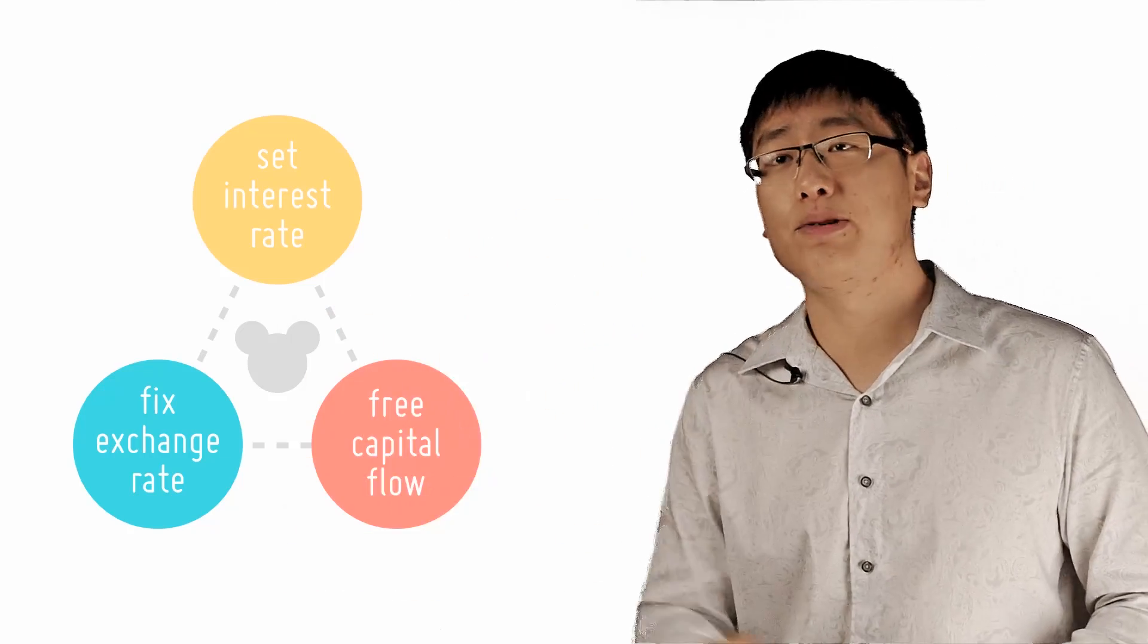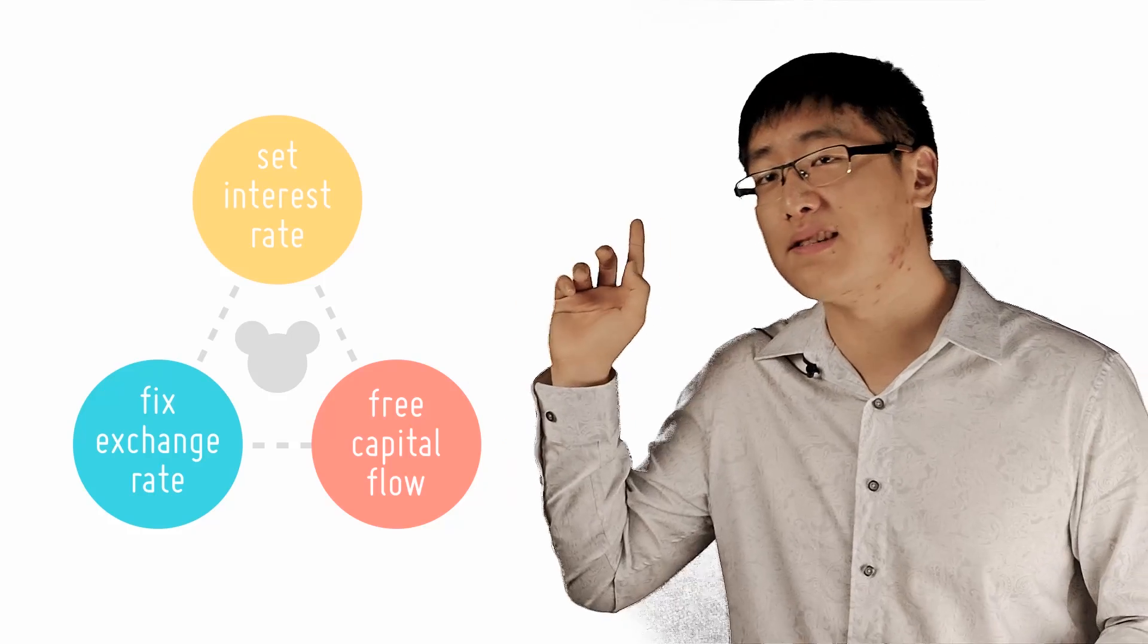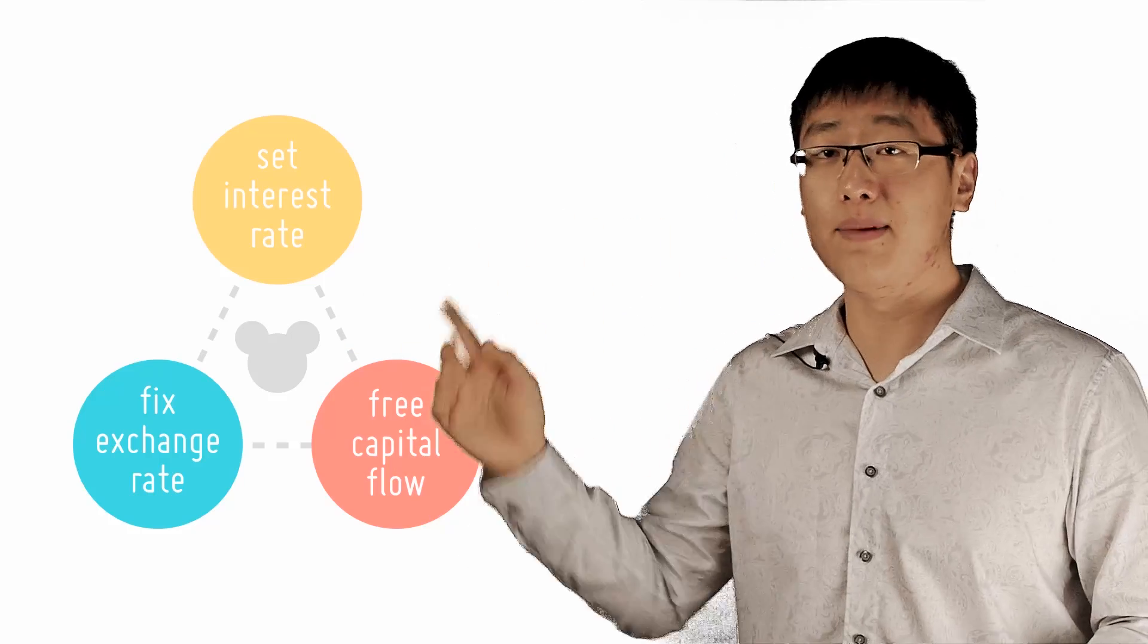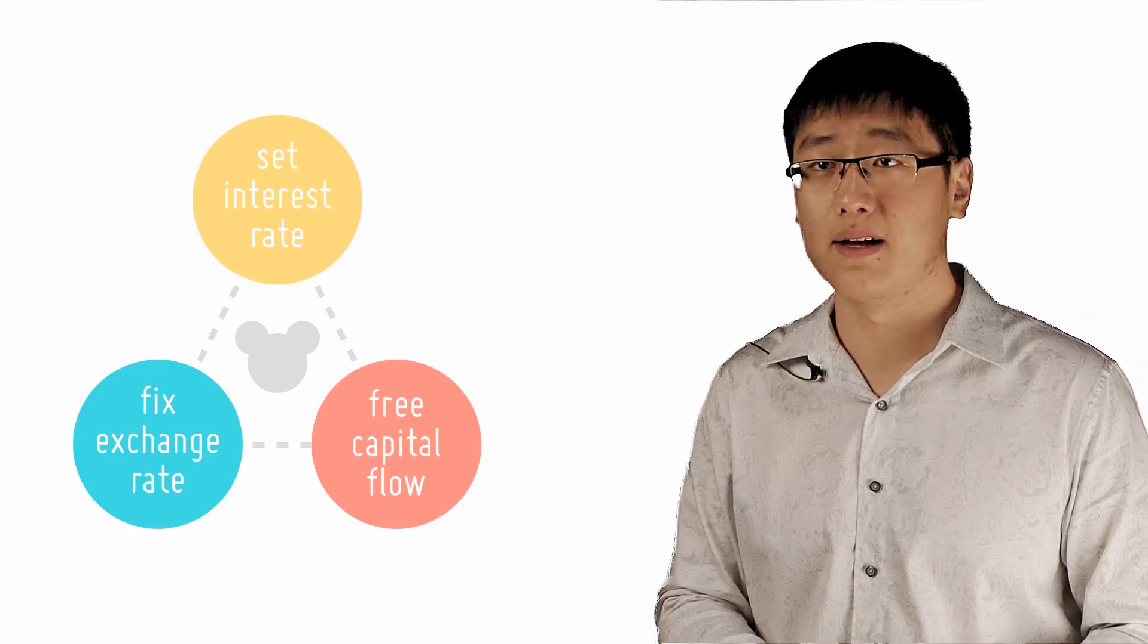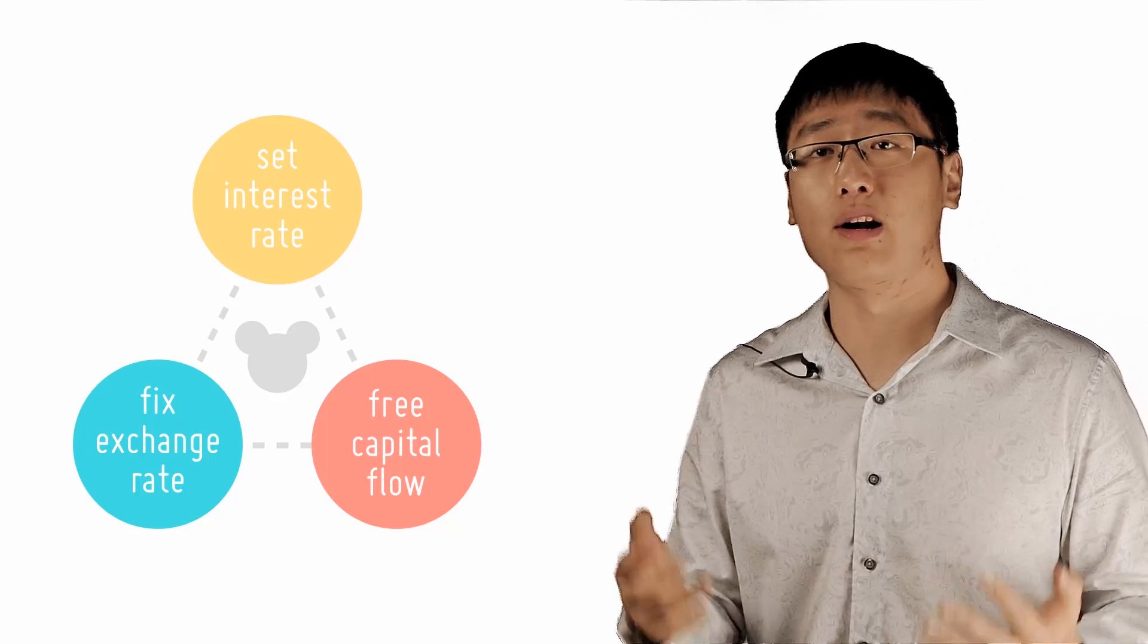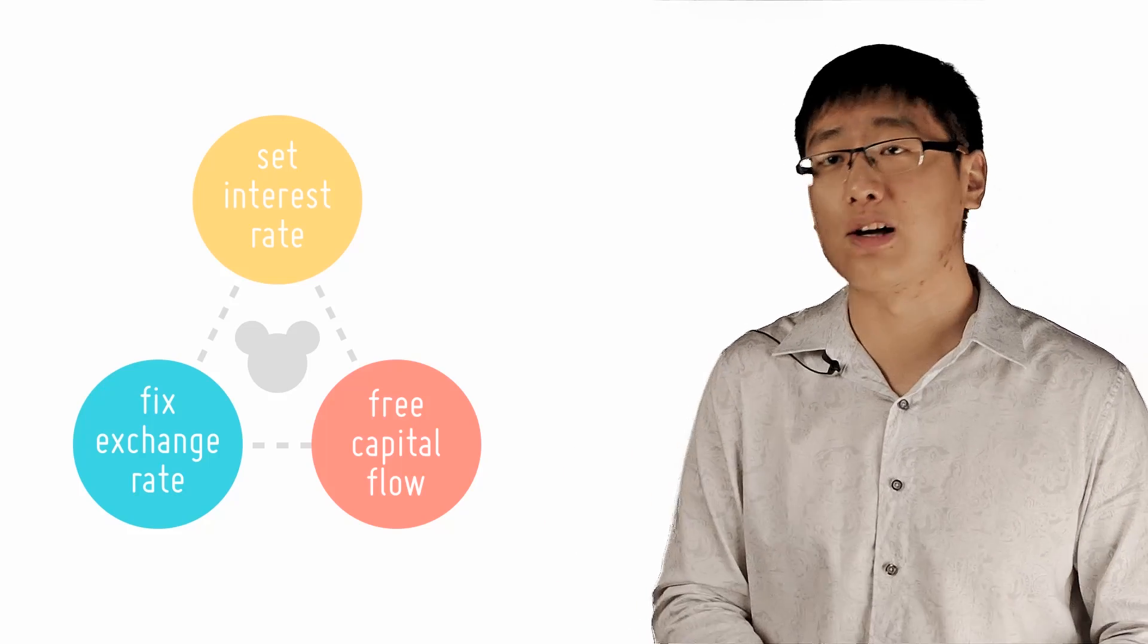Suppose that Disneyland tried to do all three of these things. It tries to maintain free capital movement through its borders, it maintains a fixed exchange rate, and it maintains the ability to set its own interest rate. Now explore what happens when trying to lower its interest rate to revive an economy in recession.